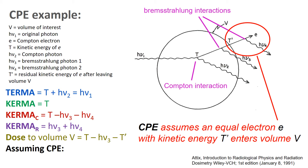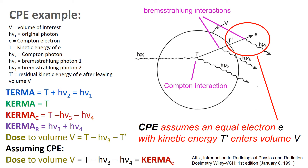Basically, you can treat this entire series of interactions as if it all happens within volume V, because anything that leaves the volume has something else coming in that will be equivalent. In that case, dose to volume V equals T minus h-nu-3 minus h-nu-4, which is the collision kerma. This gives us our key relationship: in the presence of charged particle equilibrium, dose equals collision kerma.